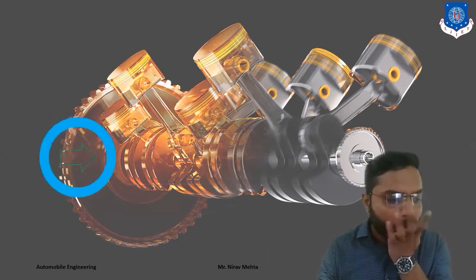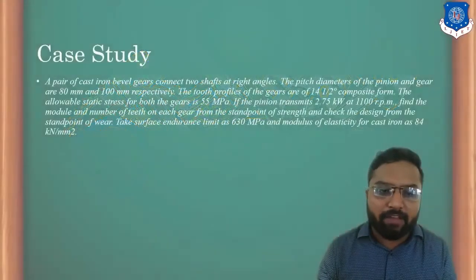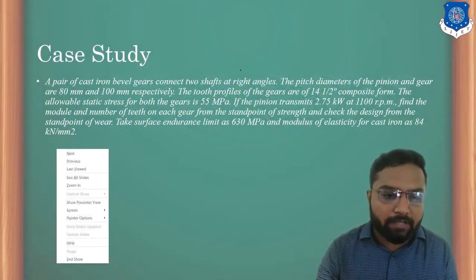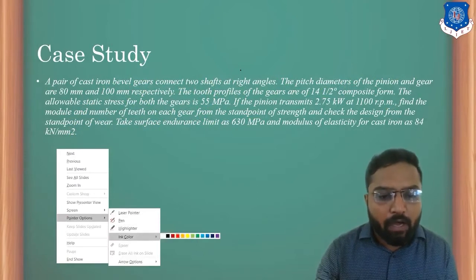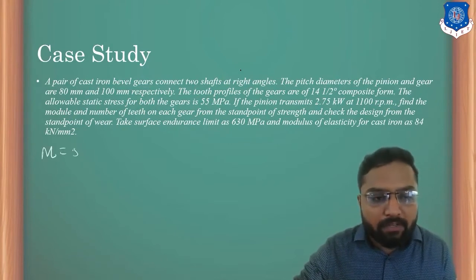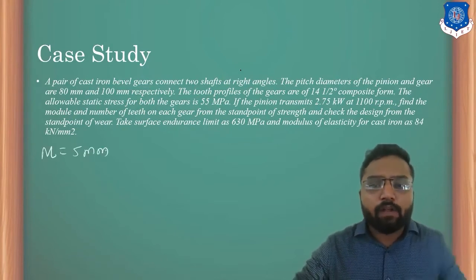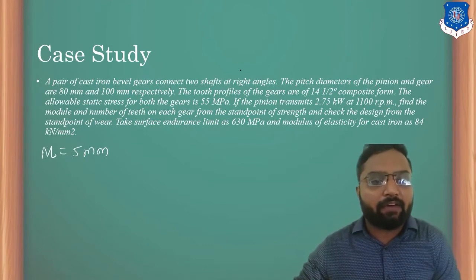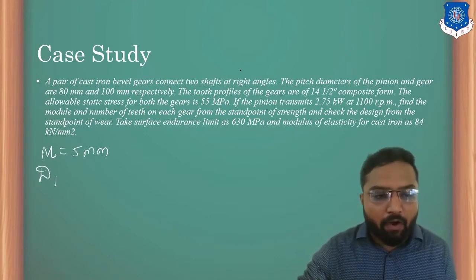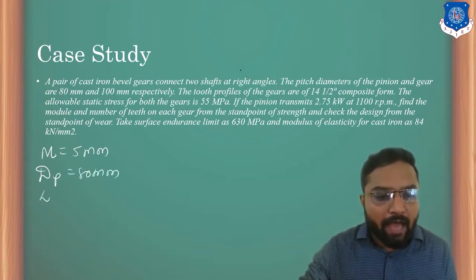I hope you understand that point very well. In the last session, we found out our module which is M equals 5 mm. Depending on that, we have to find out the number of teeth. Here we have diameter of pinion which is 80 mm and diameter of gear which is 100 mm.